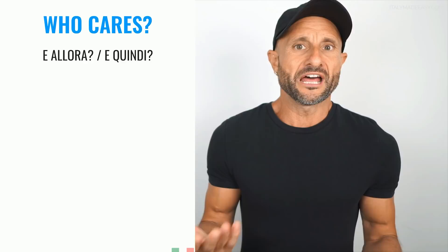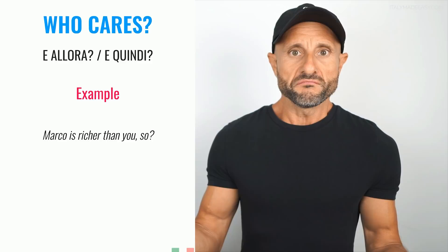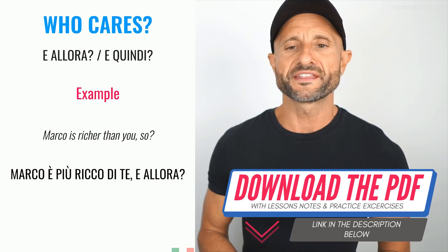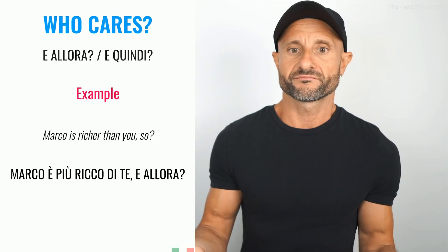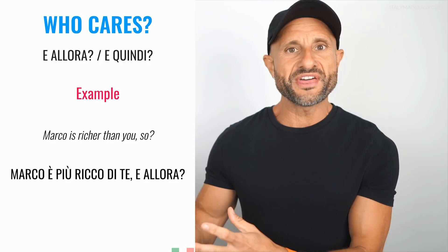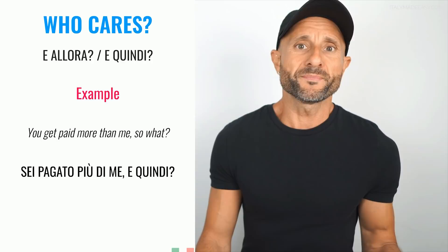And now the colorful one — SO at the end of something meaning 'so what?' In Italian we mostly use e allora? or e quindi? The e is essential. For example: 'Marco is richer than you. So?' → Marco è più ricco di te. E allora? It implies 'with that statement, what do you mean? What's the big deal?' Another example: 'You get paid more than me. So what?' → Si è pagato più di me. E quindi?